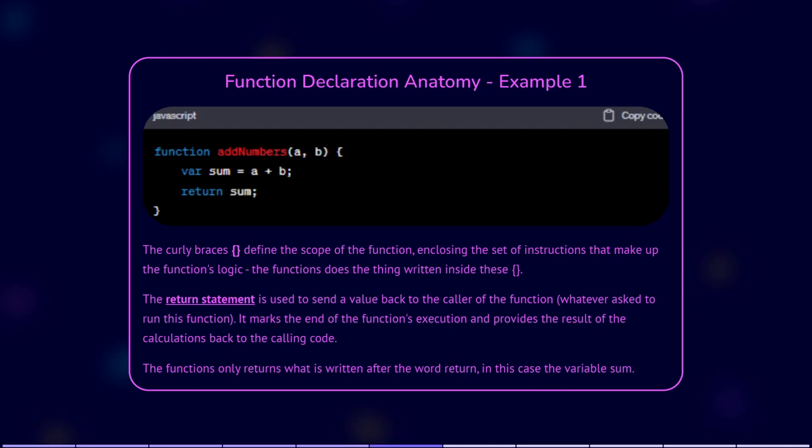The return statement is used to send a value back to the caller of the function. It marks the end of the function's execution and provides the result of the calculations back to the calling code. So the function only returns what is written after the word return. In this case it's sum. Often you want to return a variable here.